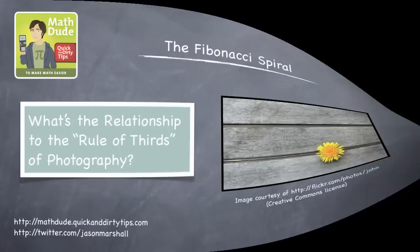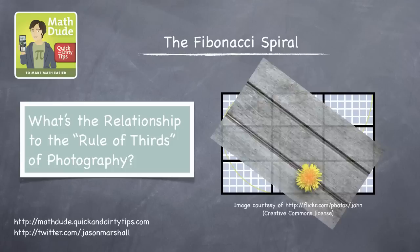Here's an example with a picture of a flower. Most people would find this composition to be pretty nice. There's something appealing about it. And it turns out the flower is positioned right at the eye of the golden spiral.